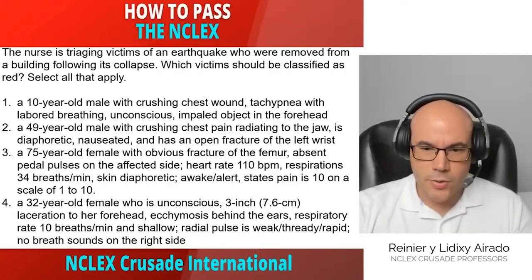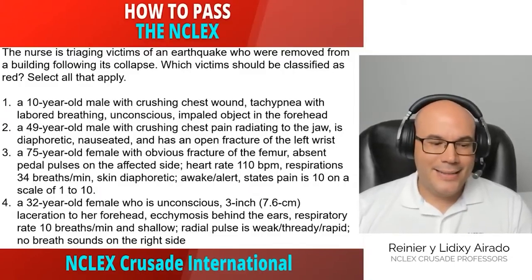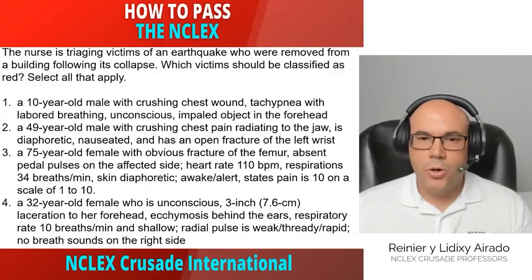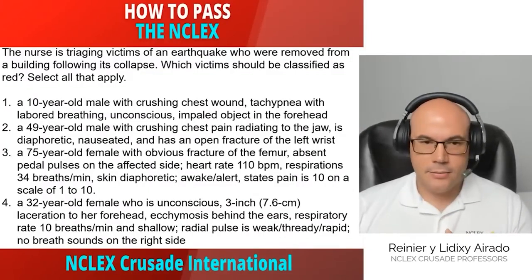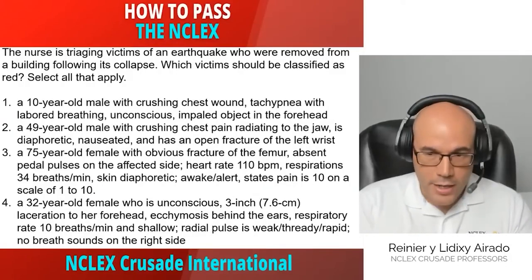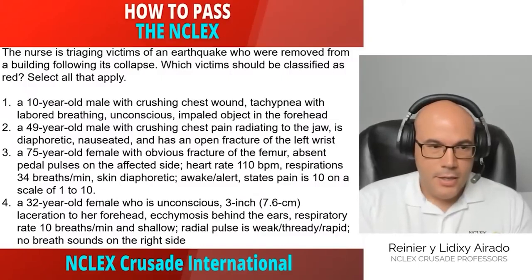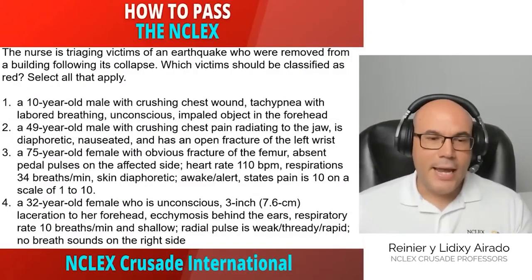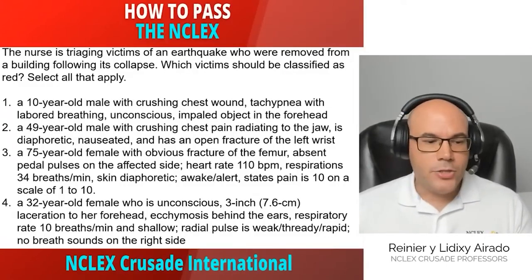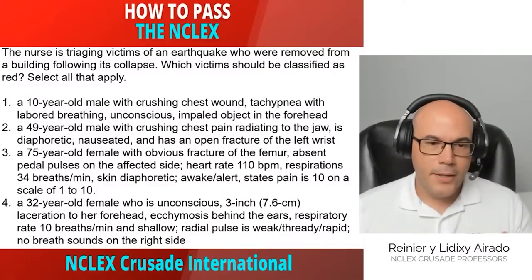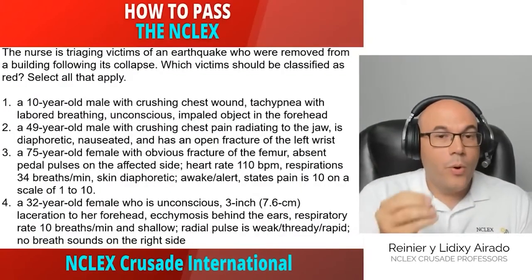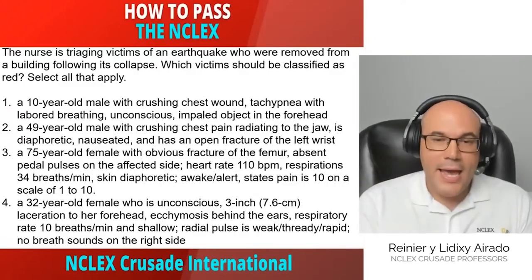In order to answer this question, you have to understand the tagging system for victims in a mass casualty event. There are four tags: one is red, two is yellow, three is green, and four is black. If a question states which patient is red, yellow, green, or black, you have to understand what patients you allocate to each tag.